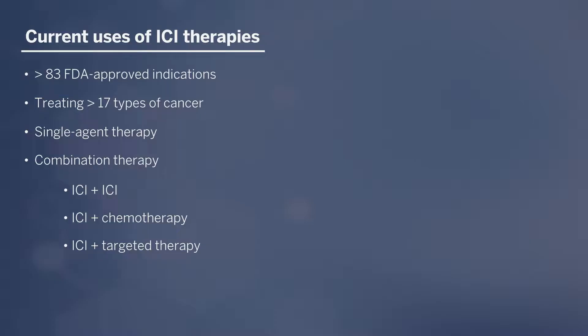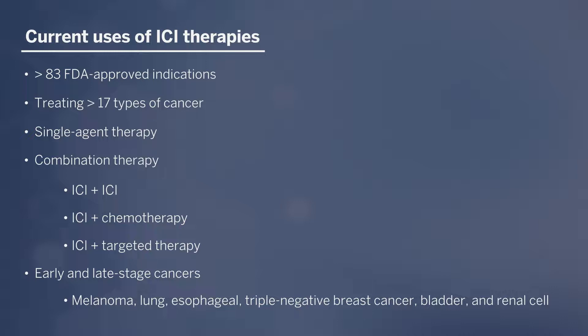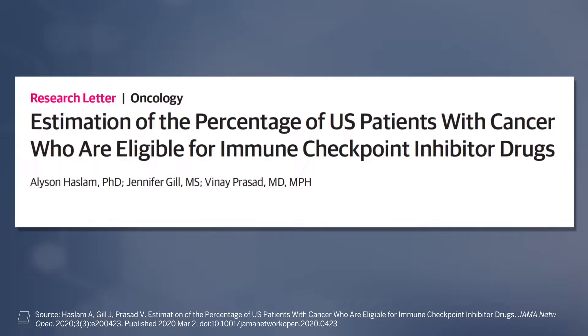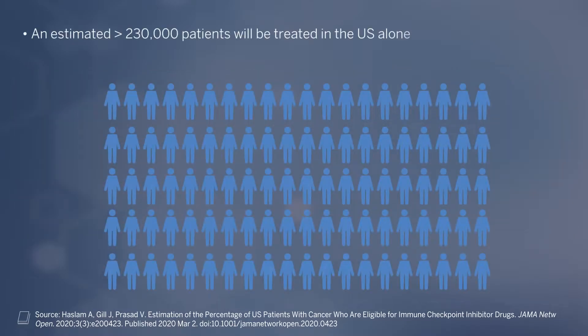In addition, we're starting to see it in earlier lines of therapy, meaning it's no longer just in metastatic disease. In over 17 cancer types it is approved, and it's approved earlier in melanoma, in lung. In 2021, it's earlier in esophageal, triple negative breast cancer, bladder, and renal cell. New checkpoints are coming down the pipeline — in fact, there are over 2,000 clinical trials in development with checkpoints. A 2020 document estimated we would treat over 230,000 patients with checkpoint on standard of care therapy in 2020, and there have been multiple approvals since, so that number is higher.